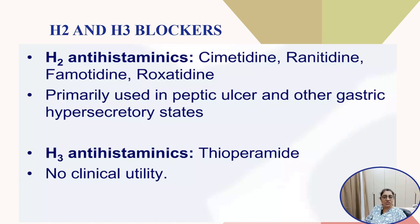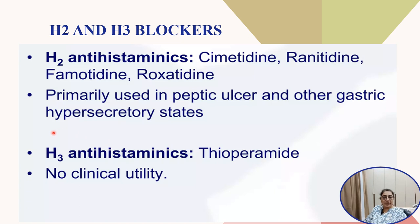H2 and H3 blockers: H2 receptors are present in the stomach and their stimulation causes hyperacidity. H2 antihistaminic drugs include cimetidine, ranitidine, famotidine, and roxatidine. However, cimetidine causes hyperandrogenic activity and ranitidine caused adverse cardiac drug reactions, so both are now banned. Currently, famotidine and roxatidine are available and are primarily used in peptic ulcer and other gastric hypersecretory states. H3 antihistaminic drug thioperamide exists but is not used clinically.